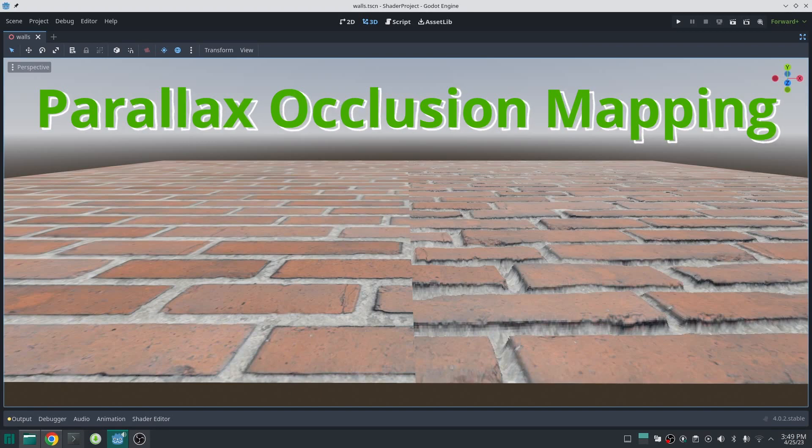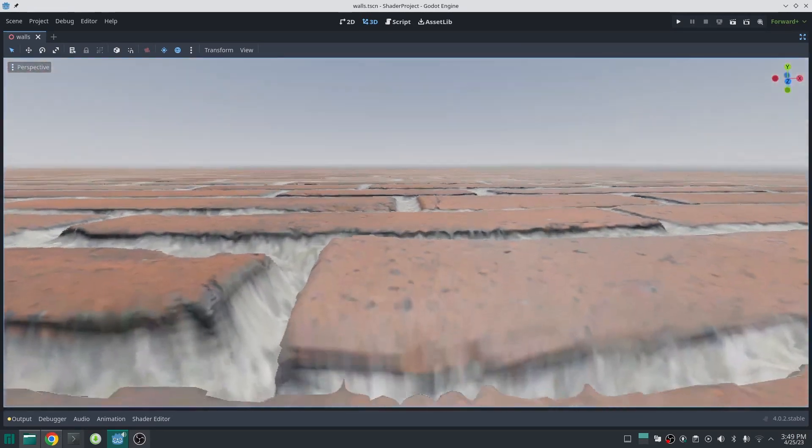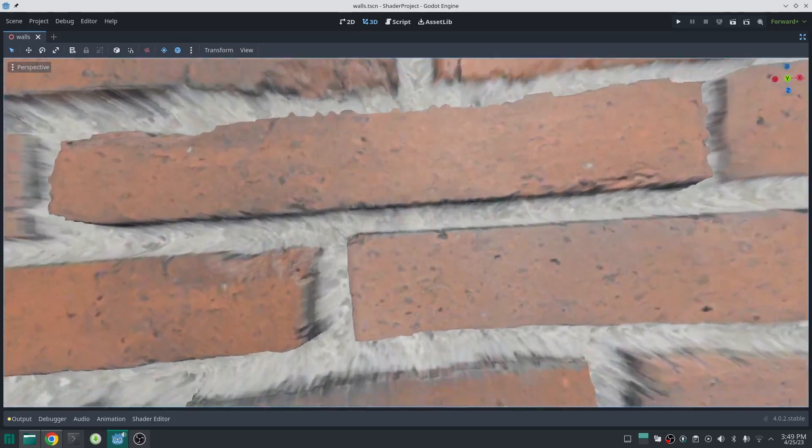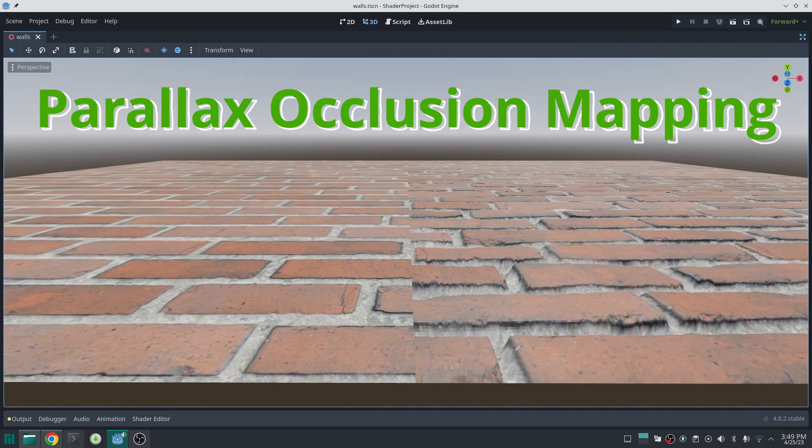Look at these walls. The wall on left hand side has only normal map and the wall on right hand side has parallax occlusion mapping applied to it. Even if you look closely, you can see the bricks which are in the front cover the bricks which are behind, and this is done all without adding new geometry.